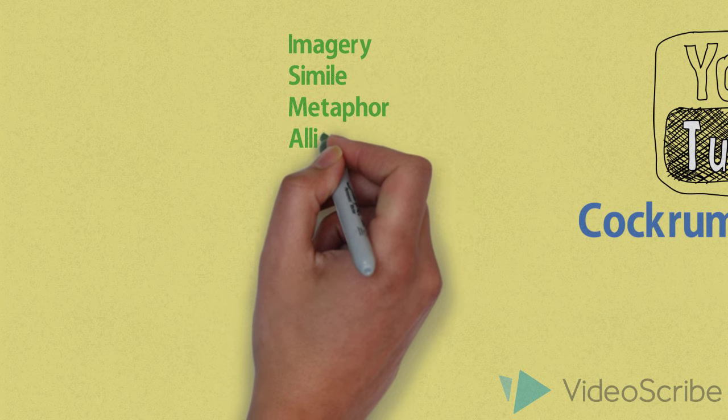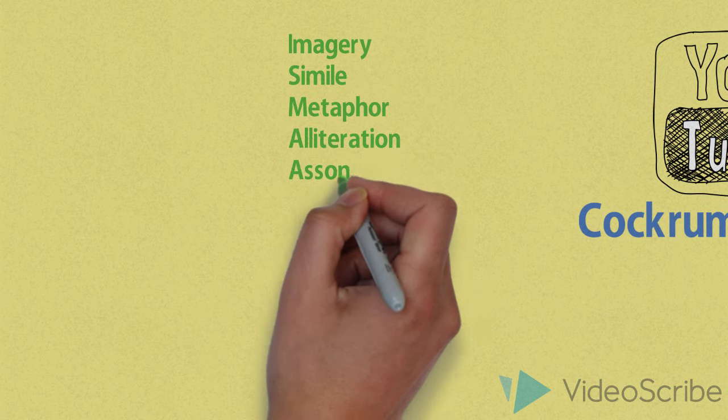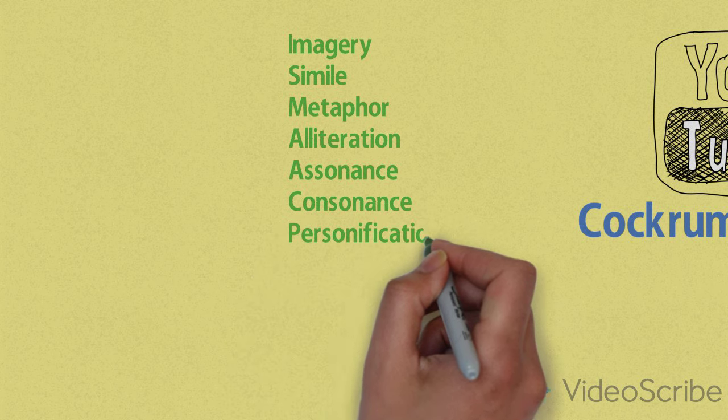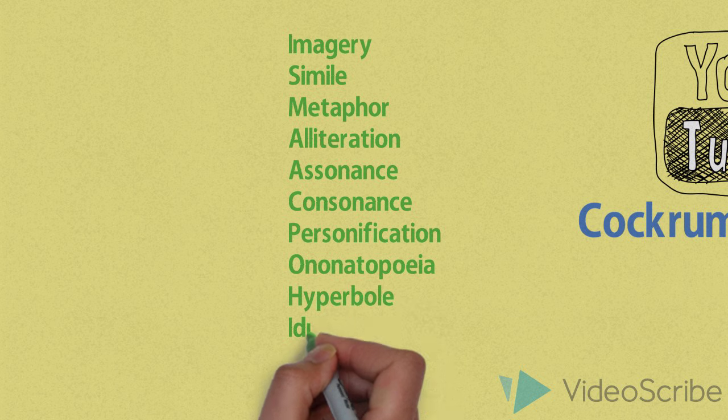So to start, the poetic devices we're going to cover are imagery, simile, metaphor, alliteration, assonance, consonance, personification, onomatopoeia, hyperbole, idioms, and rhyme.